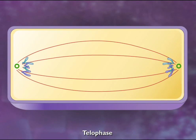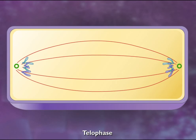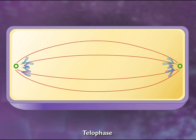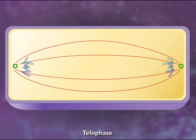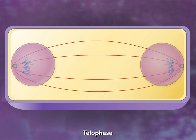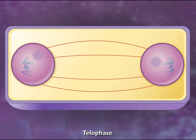During telophase, the chromatids, now called chromosomes, reach the poles of the cell as the unattached microtubules continue to elongate. The nuclear membranes begin to reform as the nucleoli reappear and the chromosomes relax as the DNA unwinds.